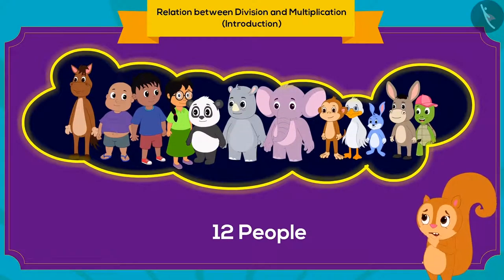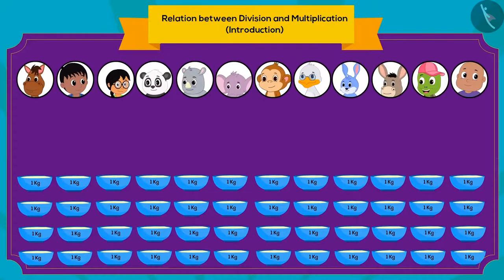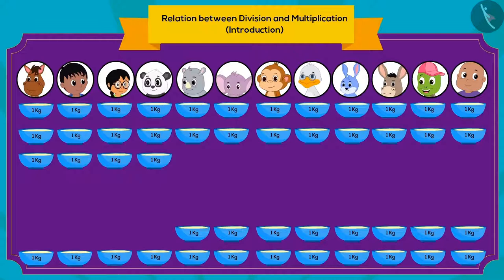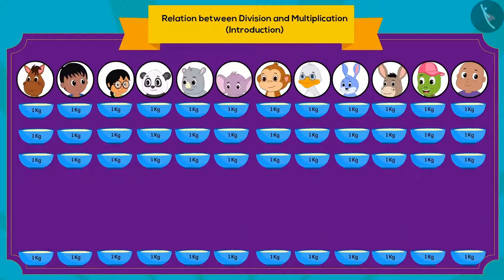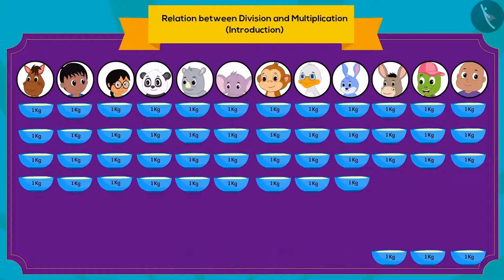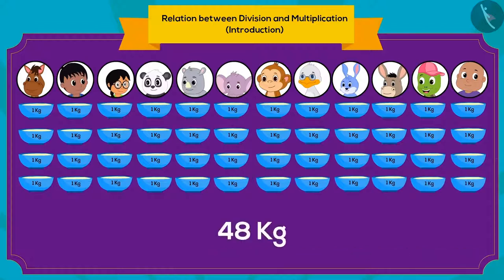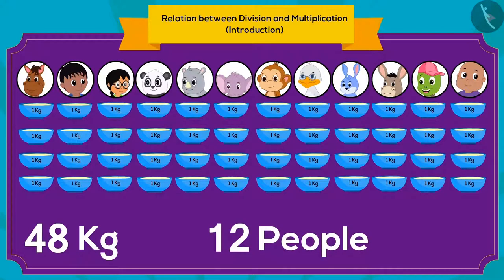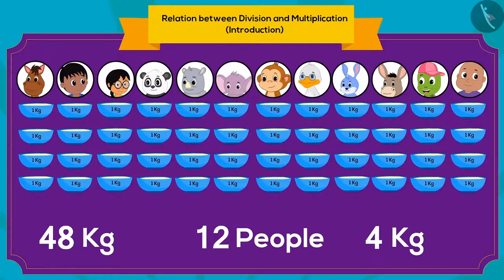Can you tell how much kheer each villager would get? Chanda will first give 2 kg of kheer to each individual. Then she will give 1 kg more to each of them, and finally 1 more kg of kheer. This way, Chanda will divide 48 kg of kheer equally among 12 people, and each person will receive 4 kg of kheer.